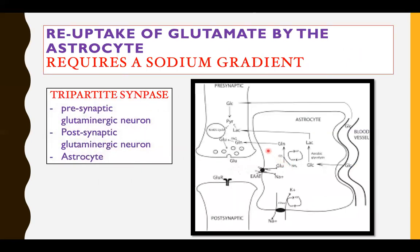This is a tripartite glutamatergic synapse, consisting of a pre-synaptic glutamatergic neuron, a post-synaptic glutamatergic neuron, and an astrocyte. Glutamate is metabolized by reuptake into the surrounding astrocyte, which requires a sodium gradient. The sodium-potassium ATPase pump creates this sodium gradient, and through secondary active transport, glutamate is transported into the astrocyte, mediated by EAAT2 (excitatory amino acid transporter 2).